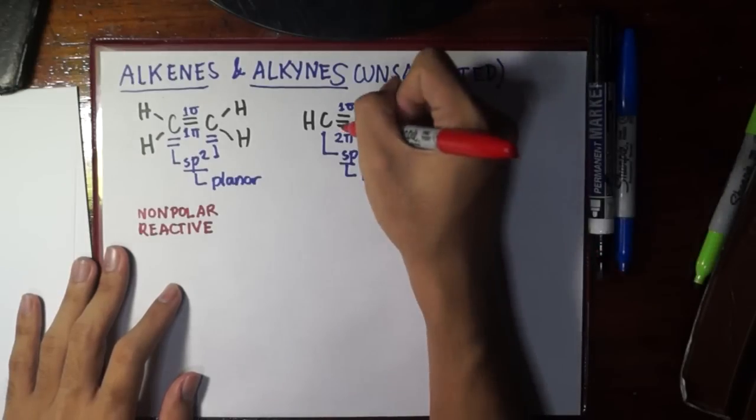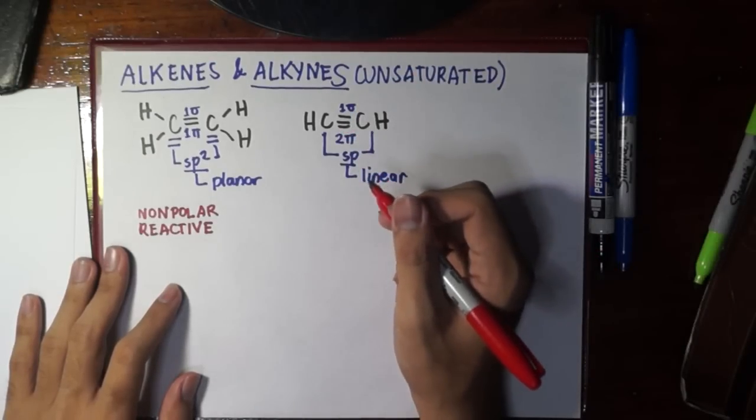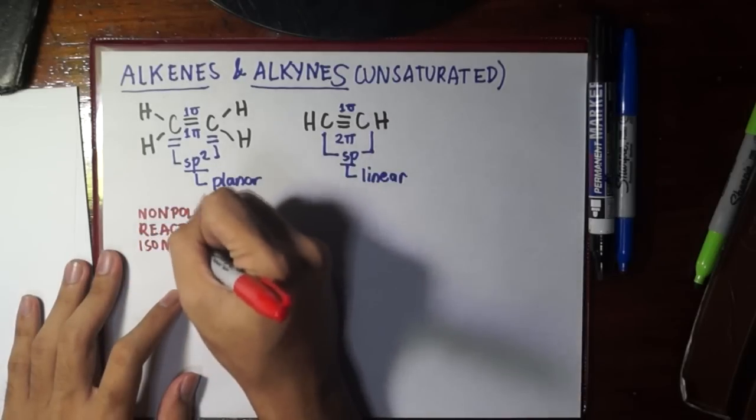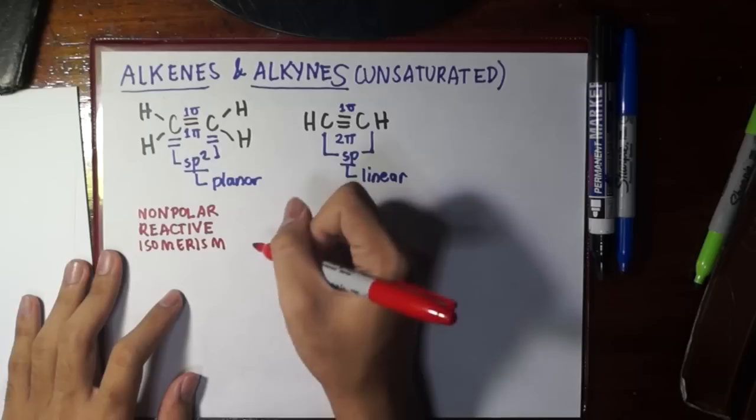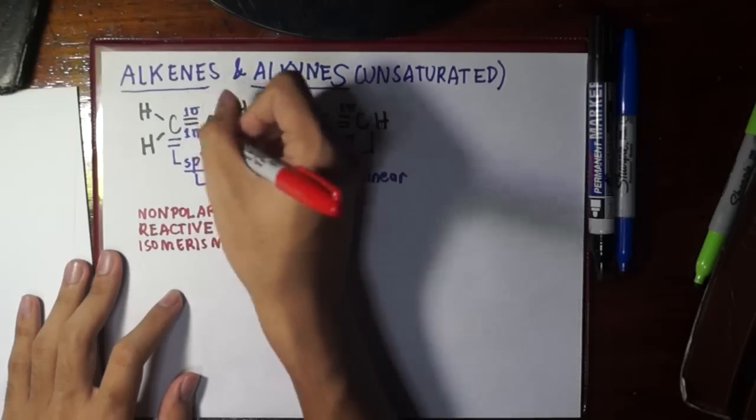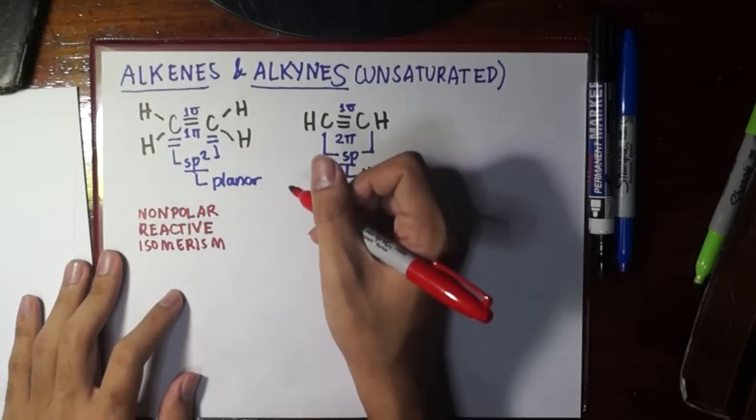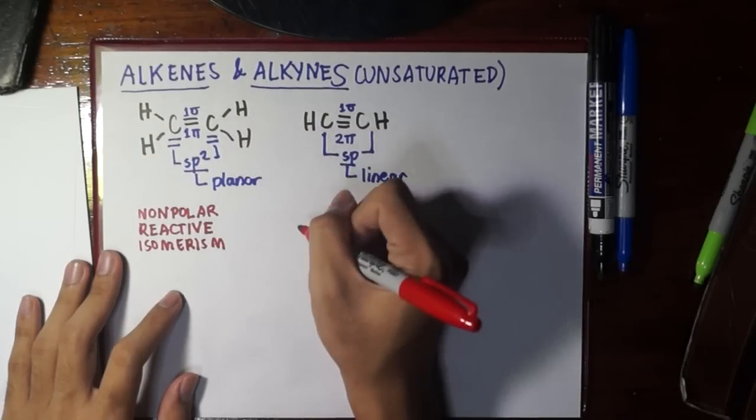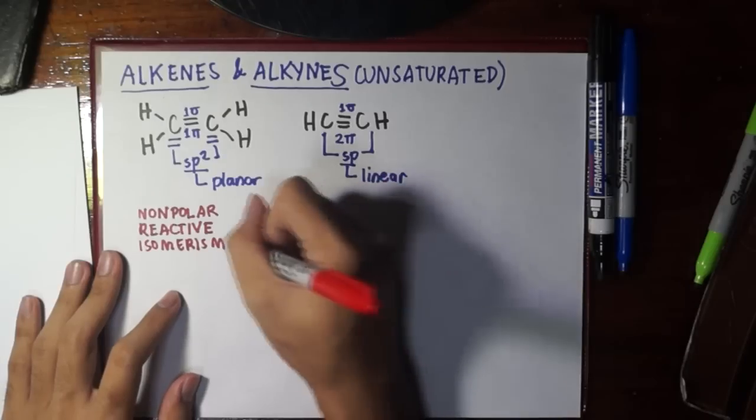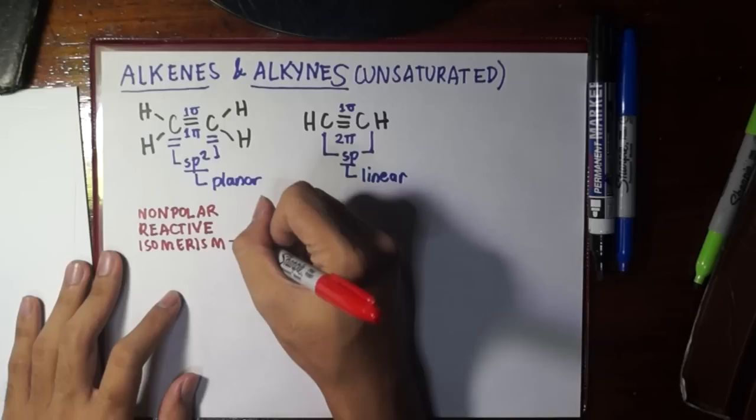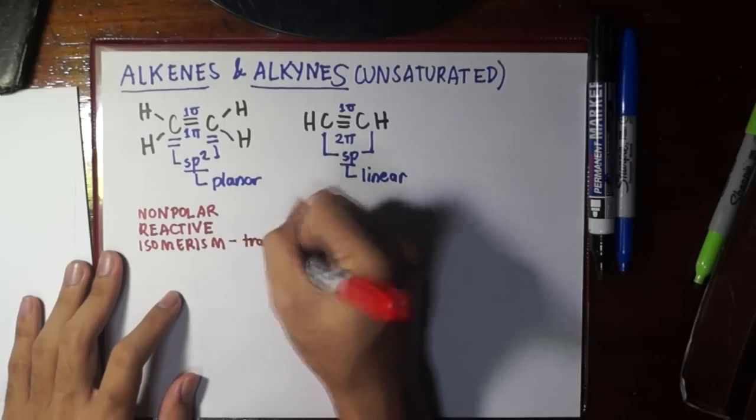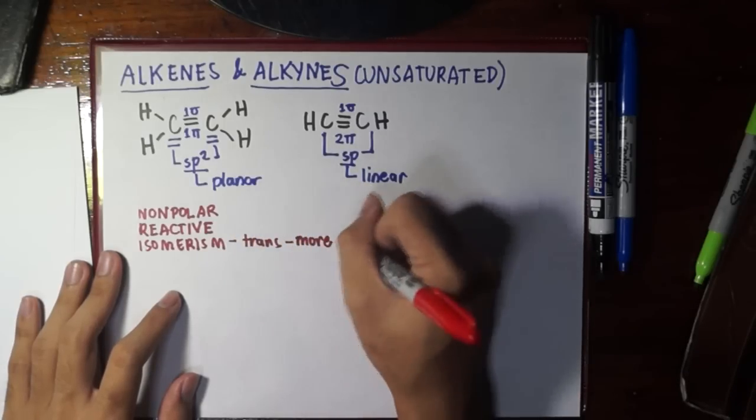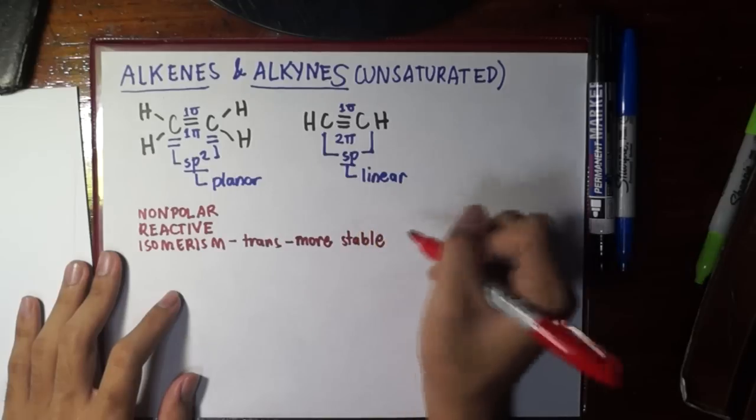Regarding their isomerism, we know they have geometric isomers, the cis-trans isomers. Between the cis and trans isomer of a certain alkene, we should know that the trans is more stable simply because their bulkier or heavier groups are far away from each other.